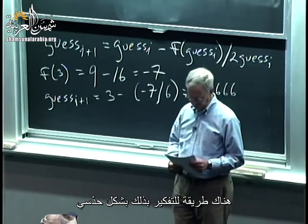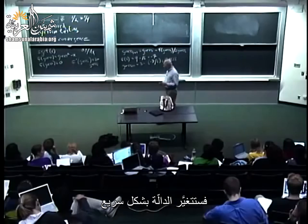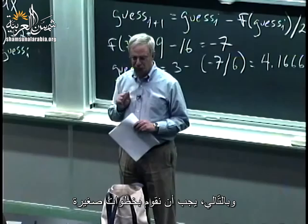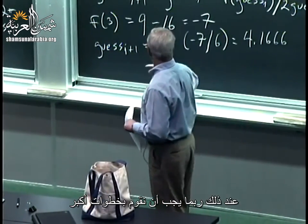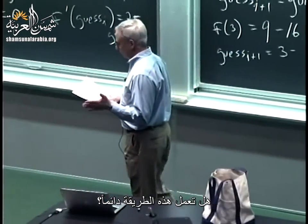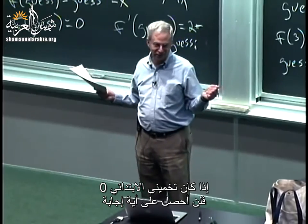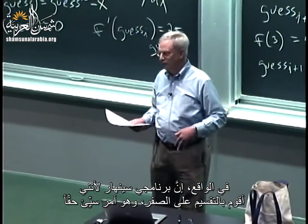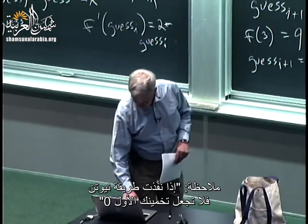Then I would reiterate this process using that as guess_i and do it again. Intuitively, if the derivative is very large, the function is changing quickly, so we take small steps; if the derivative is small, maybe we take a larger step. Does this method work all the time? We already saw no — if my initial guess is 0, I don't get anywhere. My program crashes because I end up trying to divide by 0. Hint: if you implement Newton's method, do not make your first guess 0.